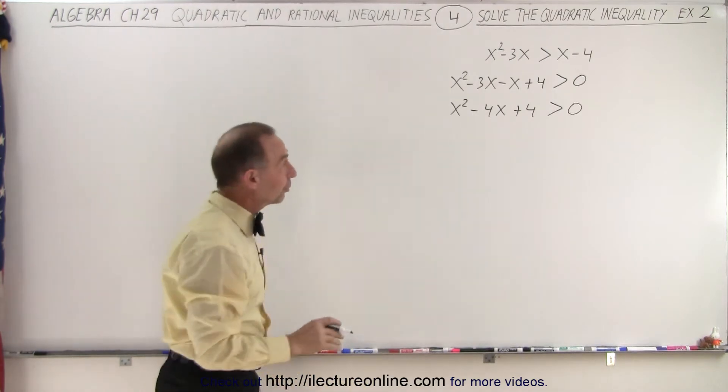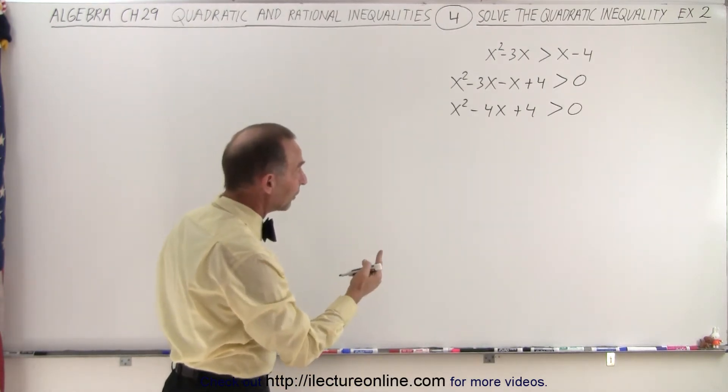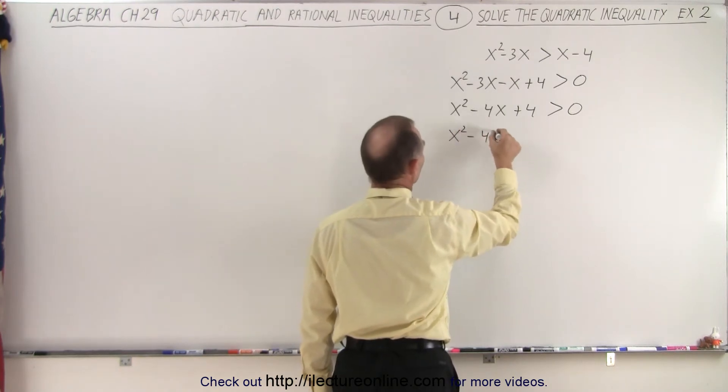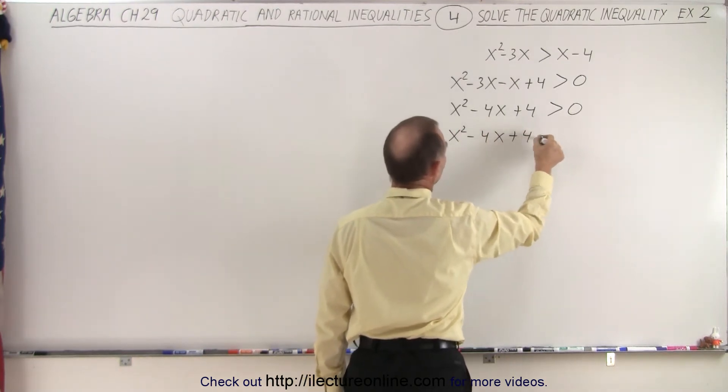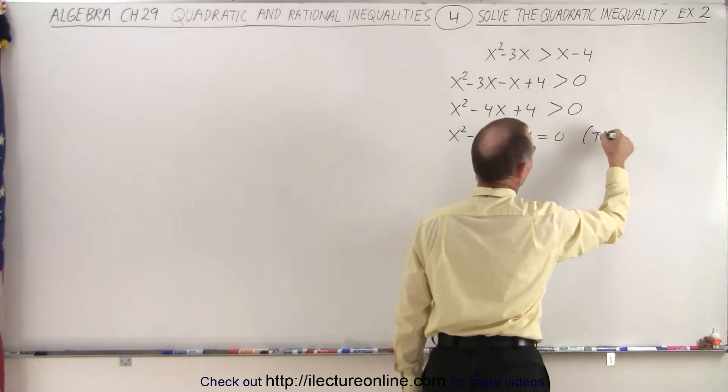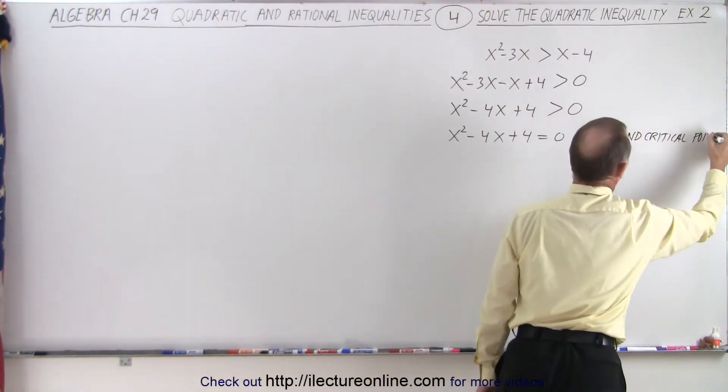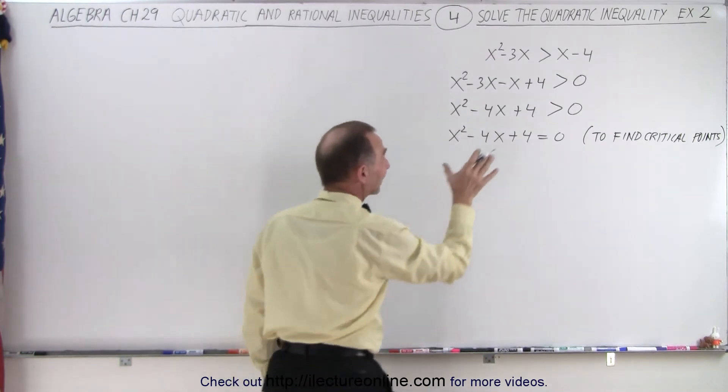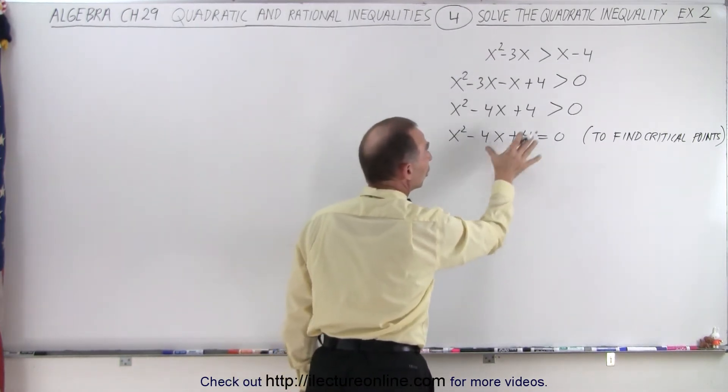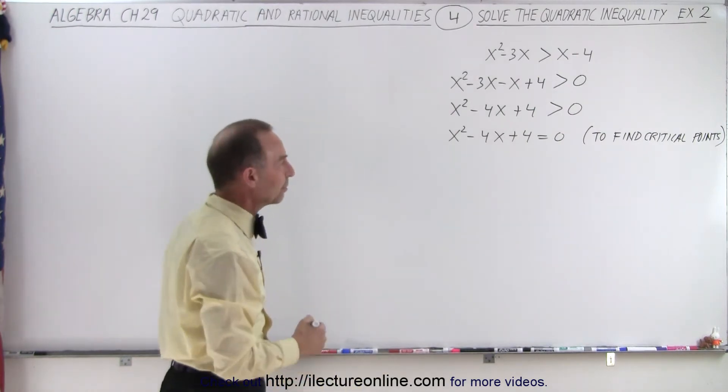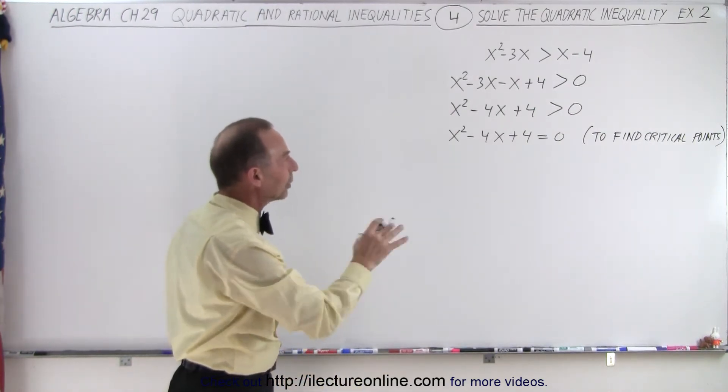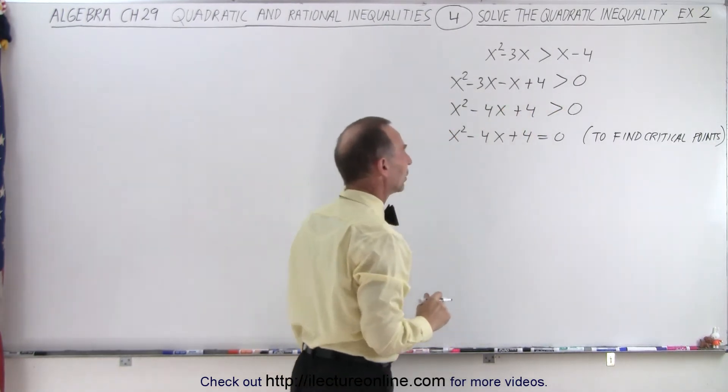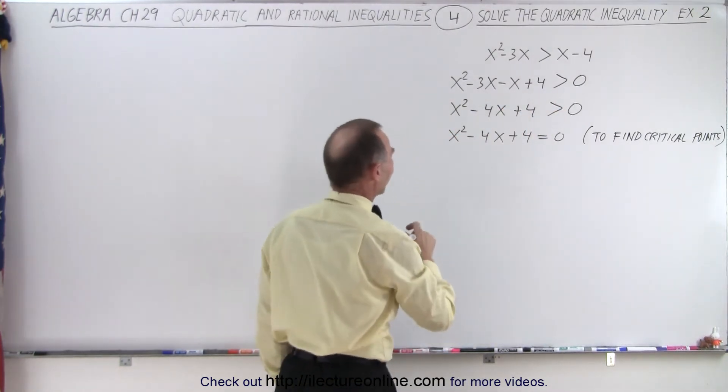So now we're ready to find the critical points by replacing that inequality symbol by an equal symbol. So we have x squared minus 4x plus 4 equal to zero, and of course we do that to find the critical points. Notice how I wrote that just to make sure that we say that is not the case. This is just something we do to find the critical points. It's the technique that we employ. It's not that that's equal to. This is obviously not the same thing as our original inequality.